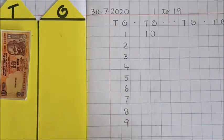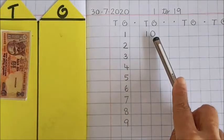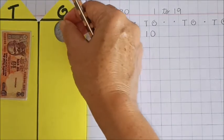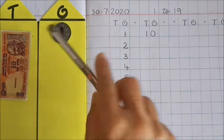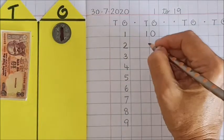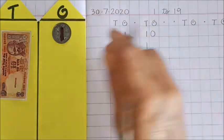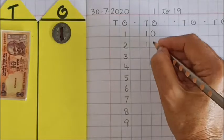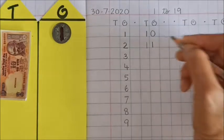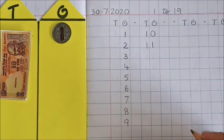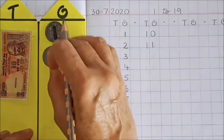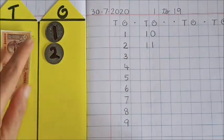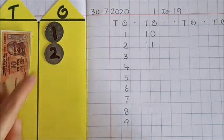One ten and zero extra is number ten. Now one more has come — the new number is eleven. One ten and one extra is number eleven. Now two extra: ten, eleven, twelve.